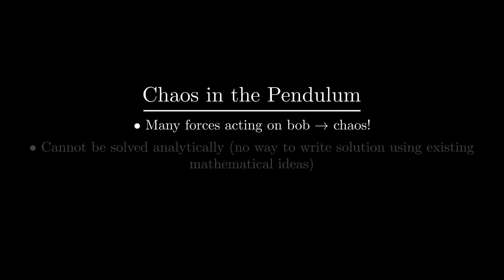Why does chaos emerge here? Many forces are acting on the bob, which leads to solutions appearing random and unpredictable in the long term. In fact, no analytical solution exists, i.e. it's impossible to express a solution in terms of existing mathematical functions.